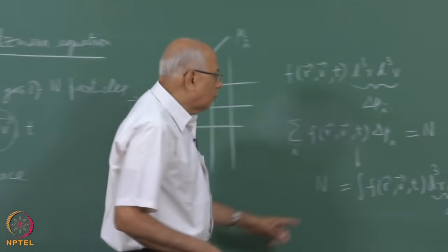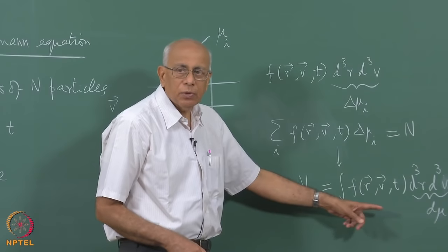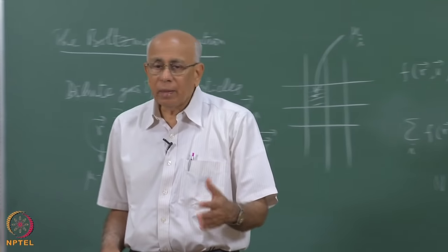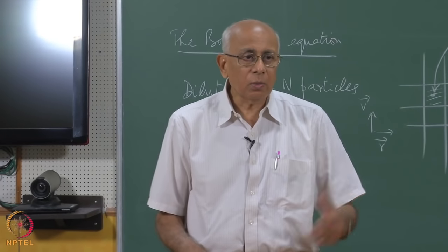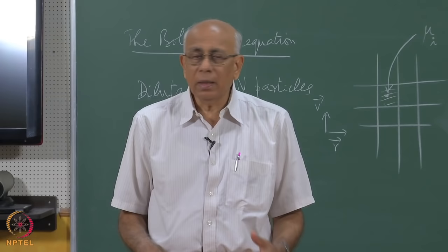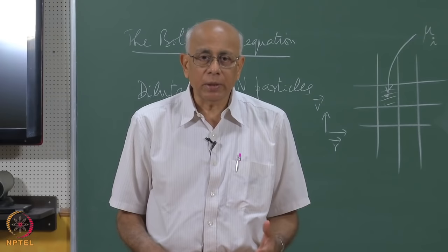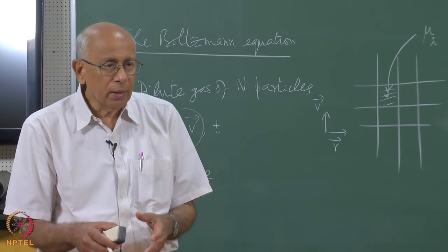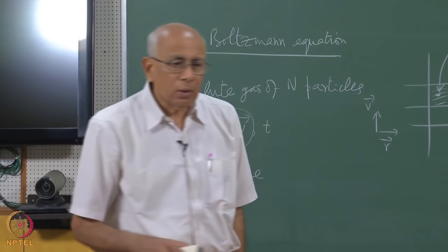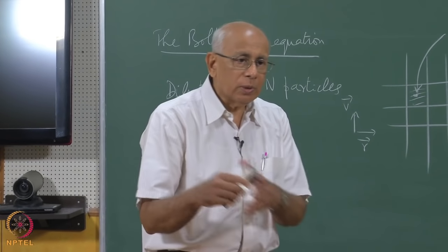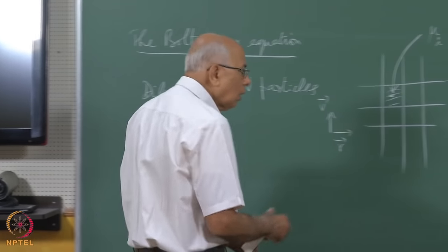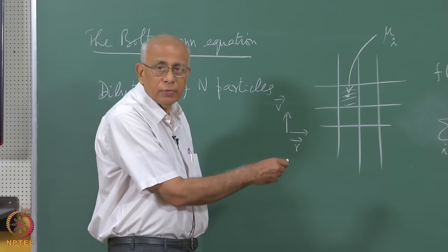Just as when we worked with density matrices in classical or quantum mechanics, we found the Liouville equation: δρ/δt equals the Poisson bracket or commutator of ρ with H. We want a comparable equation for f here. We are going to assume that the gas is dilute, meaning it is so spread apart that the de Broglie wavelength of each particle is much smaller than the inter-particle separation—the standard criterion for non-degeneracy in the quantum mechanical sense.